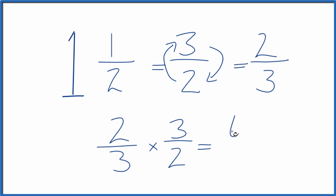2 times 3 is 6, 3 times 2 is 6, and 6 divided by 6 is 1. So we did this correctly.